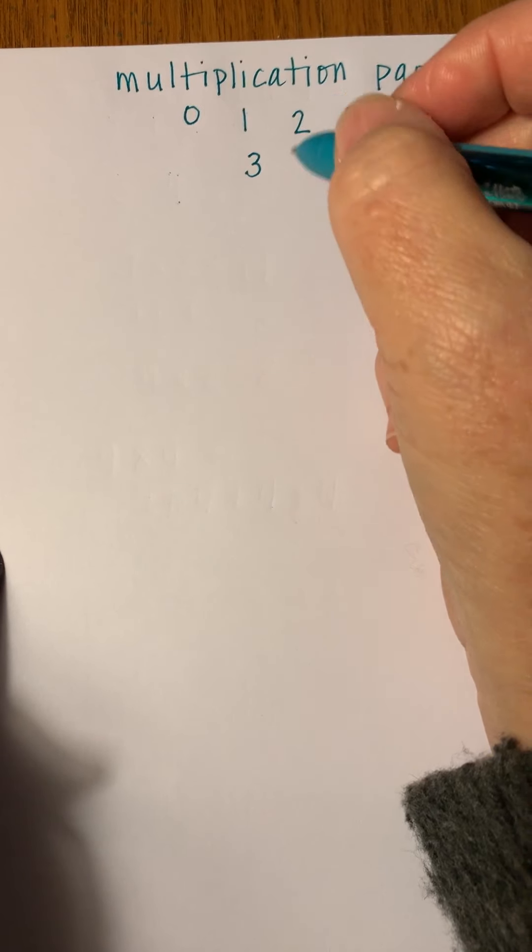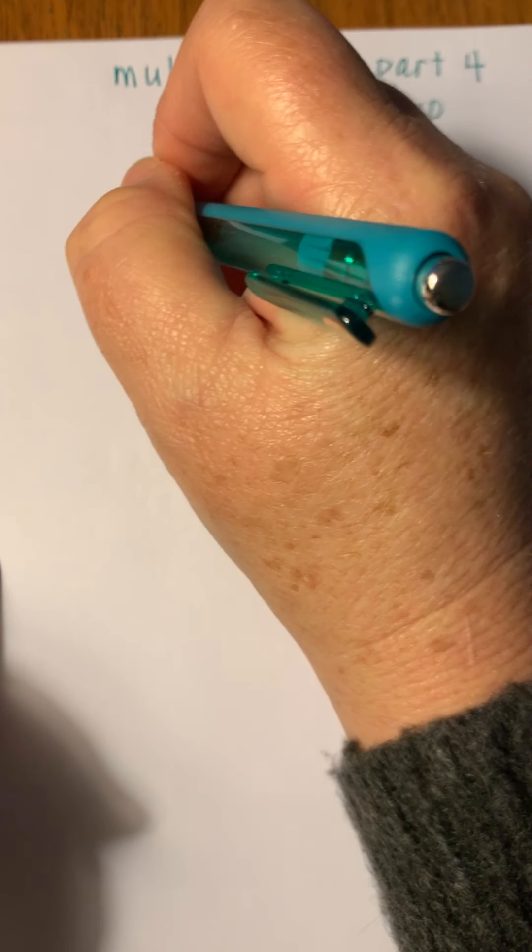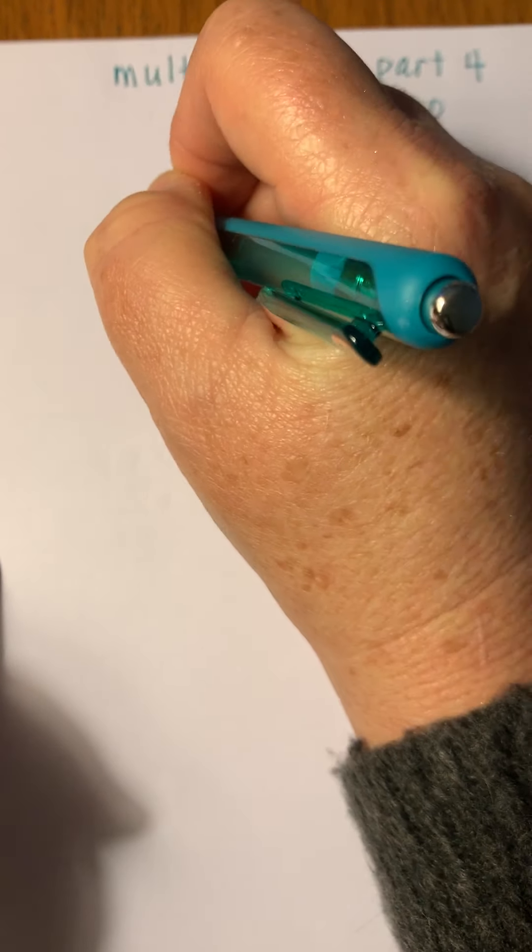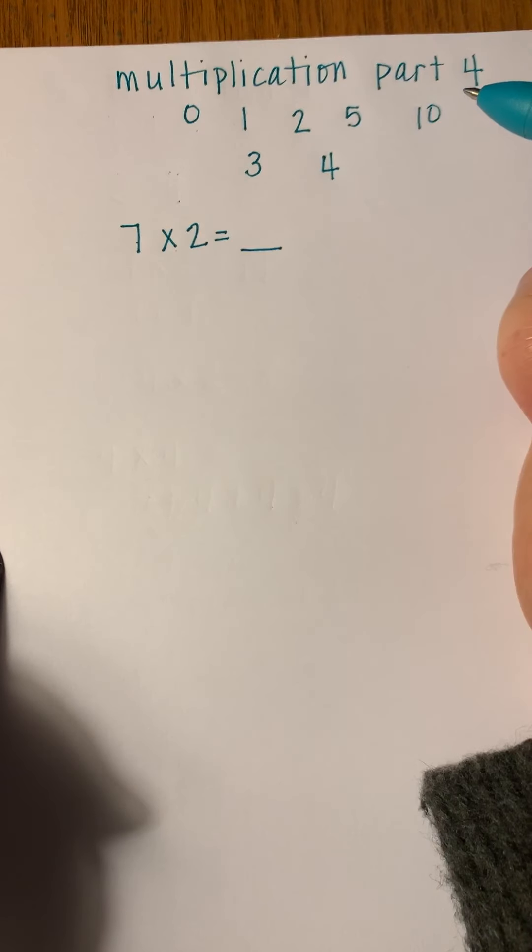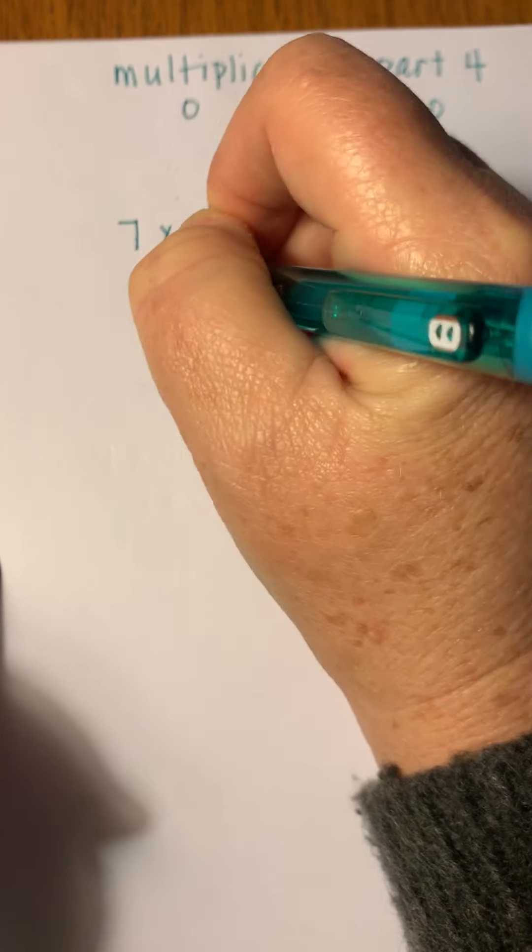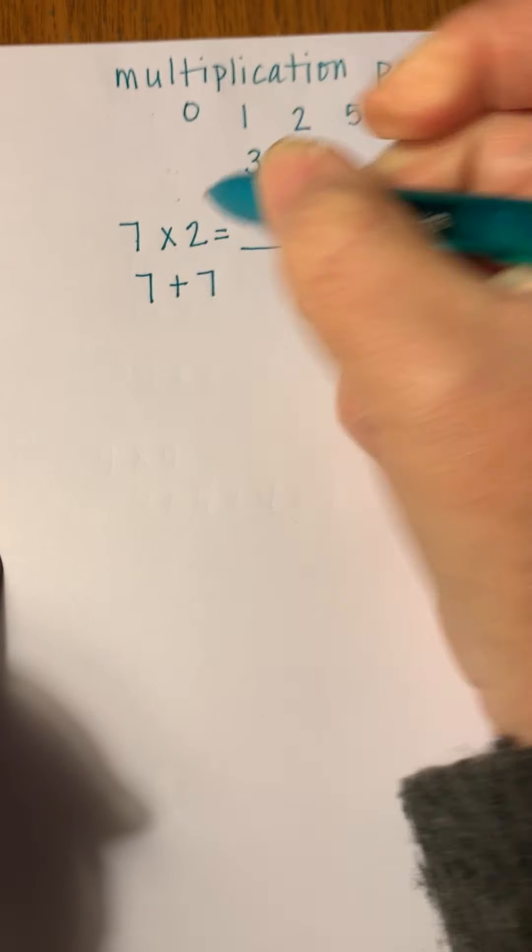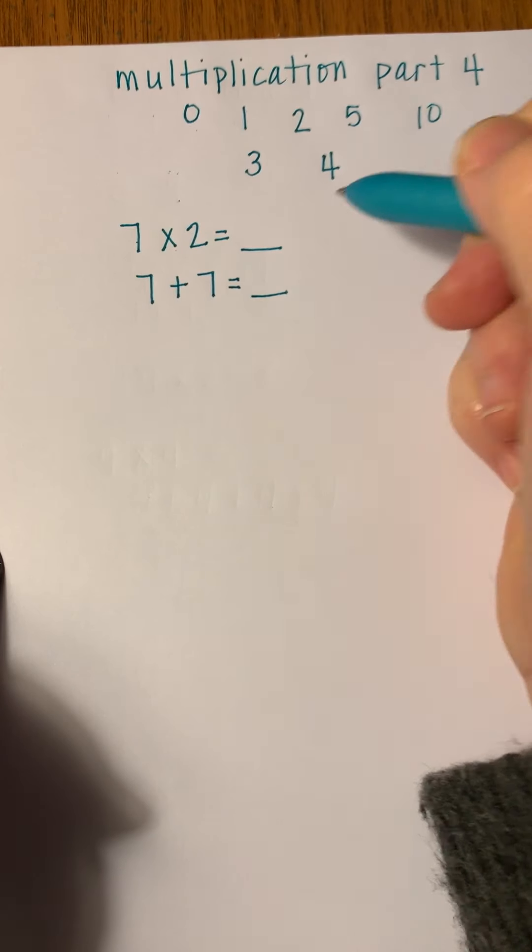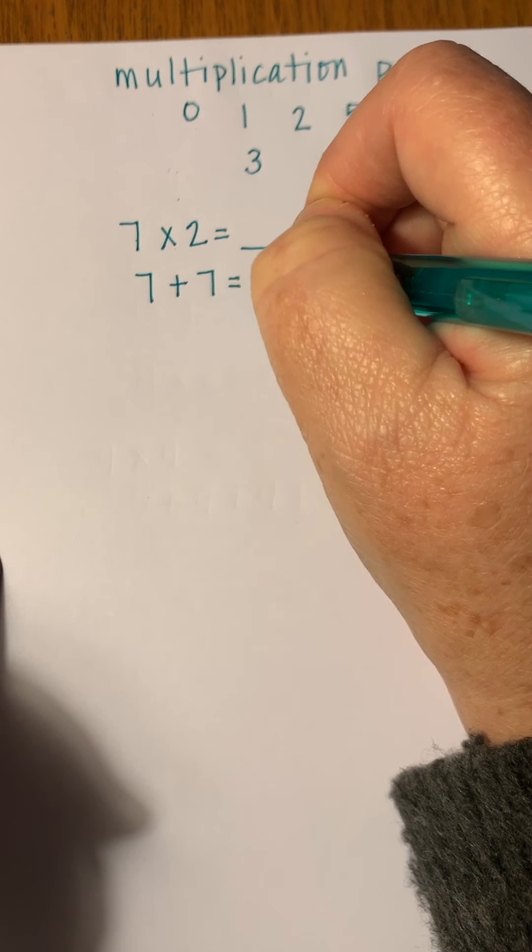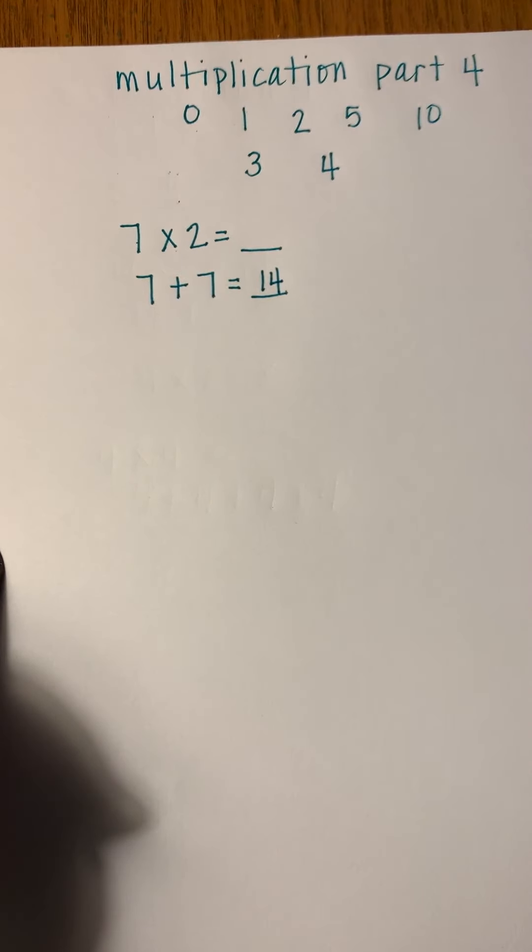If you remember in the first videos, I said that anything times 2 is just the doubles. So 7 times 2 has an answer, and it's going to be the same answer as if you did 7 plus 7. We know that this is 14; we learned those doubles in first grade.